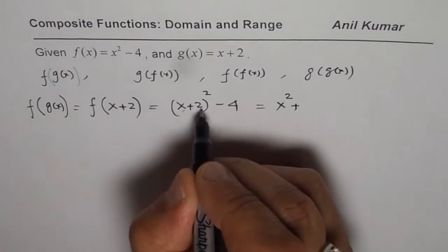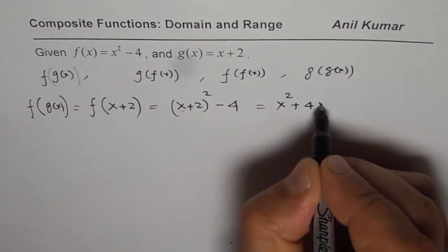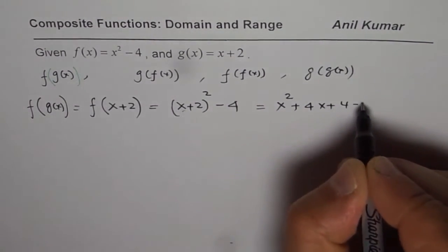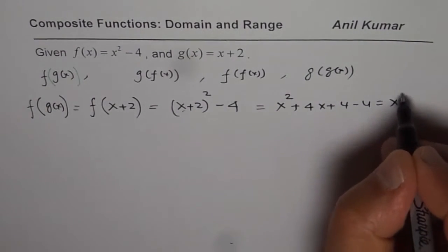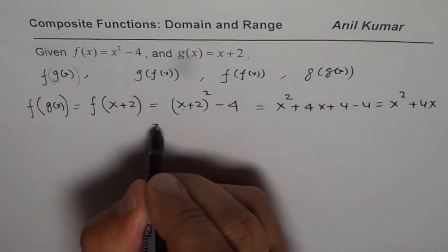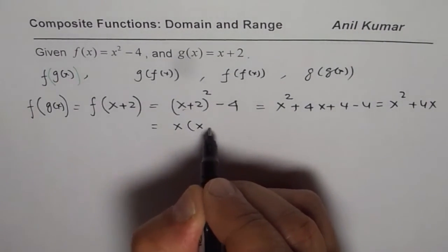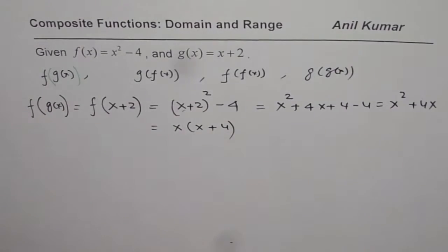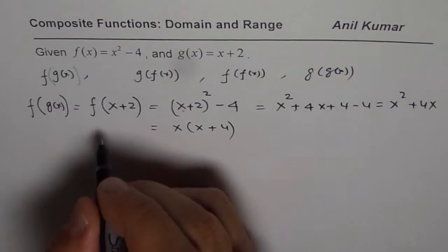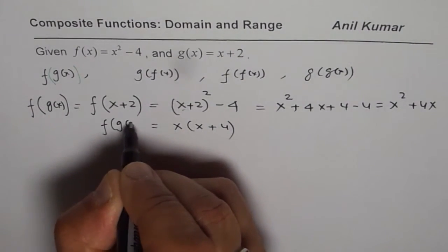We get x squared plus 4x plus 4 minus 4. That is x squared plus 4x. This could be simplified as x times x plus 4. That is how we could simplify this function, and that is f of g of x.